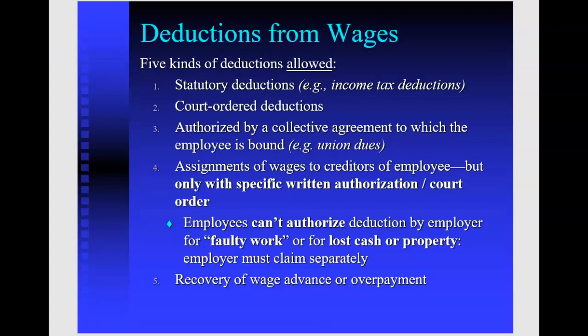There are five permissible deductions from wages. First, statutory deductions: income tax, employment insurance, and CPP. Second, court-ordered deductions — for example, if an employee has a court debt, the court orders the employer to deduct wages and pay directly to the creditor. This can also apply to family support court orders. Third, deductions authorized by a collective agreement — union dues are the most common example.